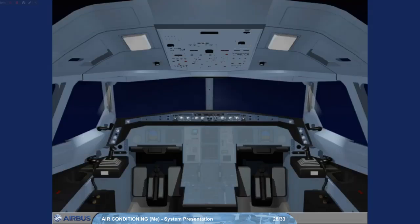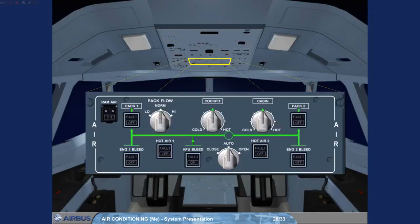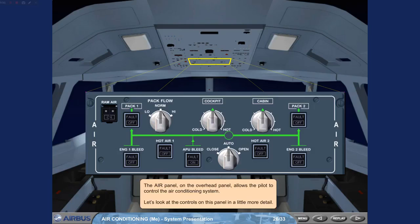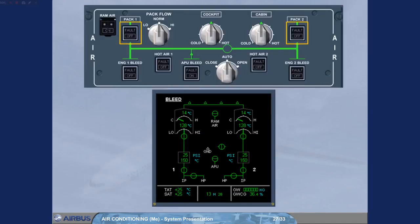The air panel on the overhead panel allows the pilot to control the air conditioning system. Let's look at the controls on this panel in a little more detail. The pack push-button switches control their associated pack flow control valves.